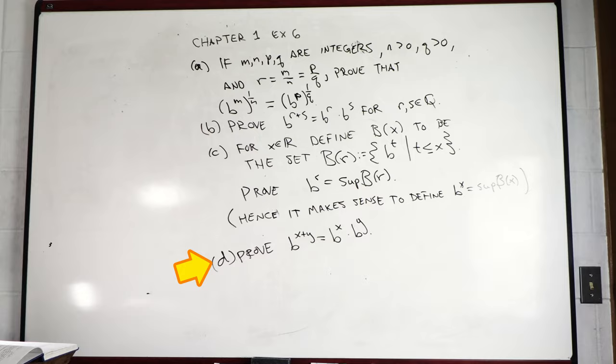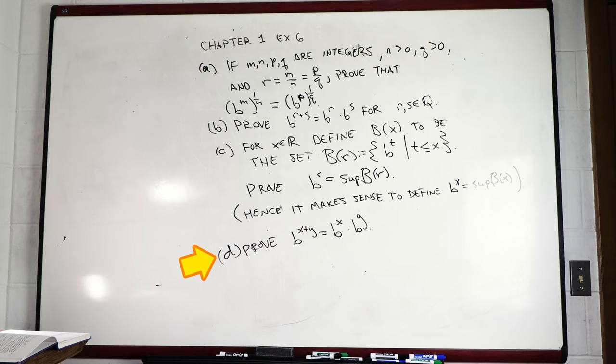So that last part of the question, I'm not going to do right here. It basically is just a matter of playing with least upper bounds. And you'll ultimately show that b raised to the x plus y is equal to b raised to the x times b raised to the y for x and y real. And so then that's exponentiation and exponential functions. So that was a hard way. What's an easy way of defining the real exponent of a number?